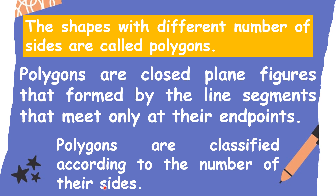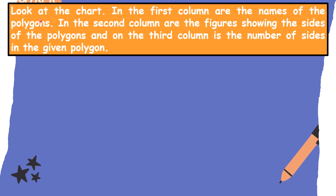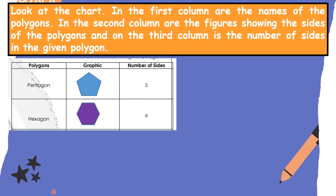Polygons have different numbers of sides. Let us learn about the different polygons. Look at the chart. The first column shows the names of the polygons. The second column shows figures that illustrate the number of sides. The third column shows the number of sides of each polygon.